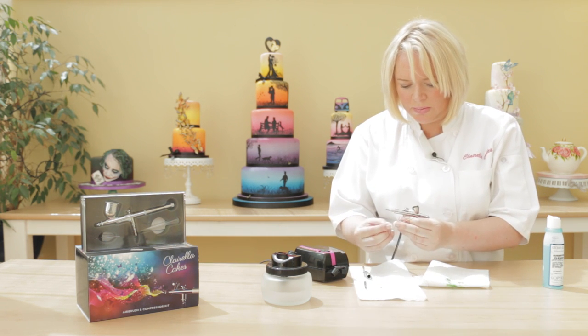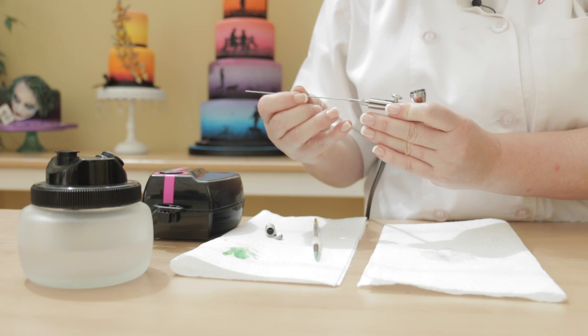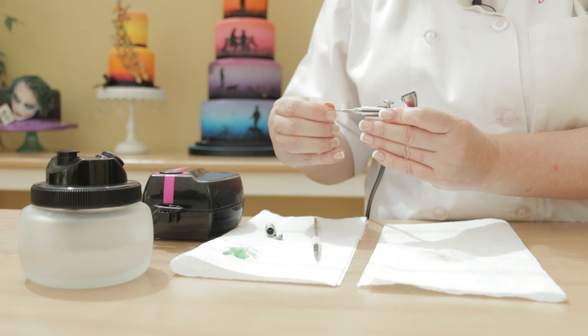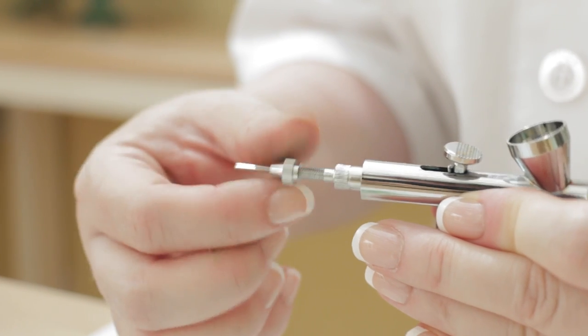Gently replace the clean needle into the main body of the airbrush, taking care not to damage the needle tip. Twist the needle. Once correctly positioned, tighten the chucking nut to secure.